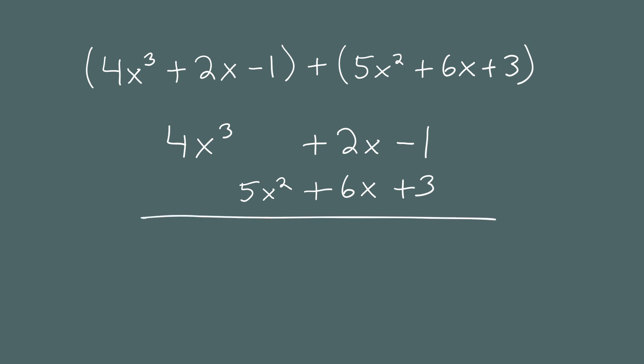Now, like before, we combine like terms. There's only one term of degree 3, so the first term in the sum is 4x cubed. There's only one term of degree 2, so the next term in the sum is plus 5x squared. Next, we combine 2x and 6x, which gives us plus 8x. And finally, we add the two numbers, negative 1 and 3, which gives us 2. So the sum of the two polynomials is 4x cubed plus 5x squared plus 8x plus 2.